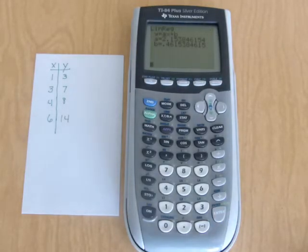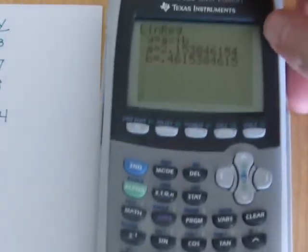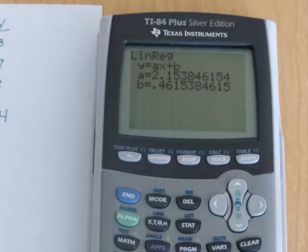And what I get is an equation. If you can see that, I will zoom in just a little bit. There's my equation. It tells me that the A value is 2.2 approximately. And the B value is about 0.46.